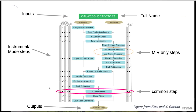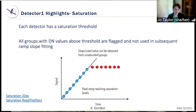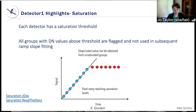Starting with the saturation step: every detector has its own saturation threshold, and any groups with values above that threshold are flagged and therefore not used in subsequent ramp slope fitting. Here's an example where every circle corresponds to a group. After you pass the saturation threshold, groups are flagged and they do not contribute to the calculation of the slope.